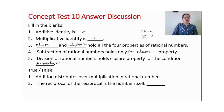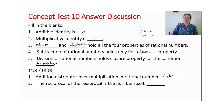True and false: 'Addition distributes over multiplication in rational numbers' — this is false. Multiplication distributes over addition or over subtraction is correct; otherwise the statement is false.